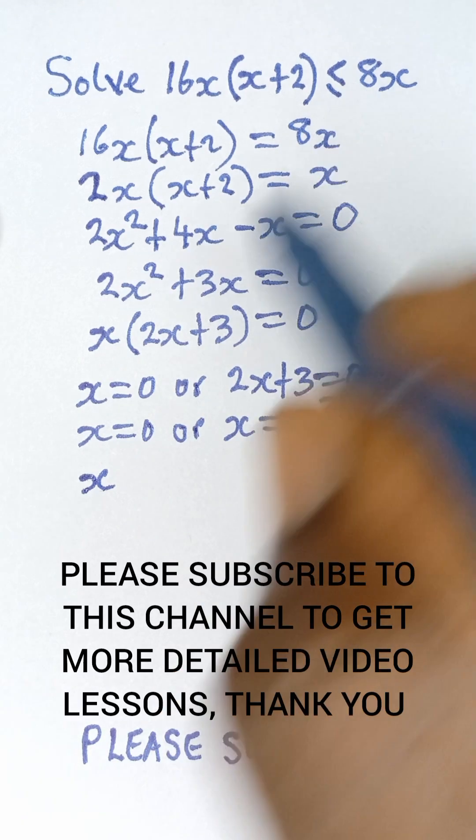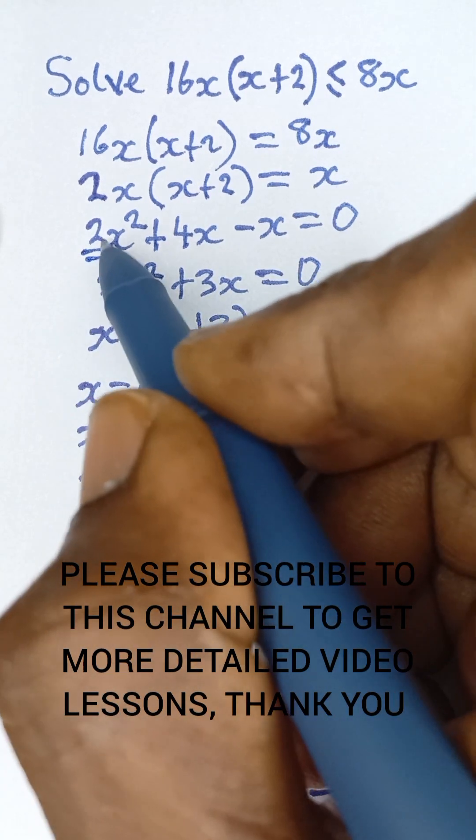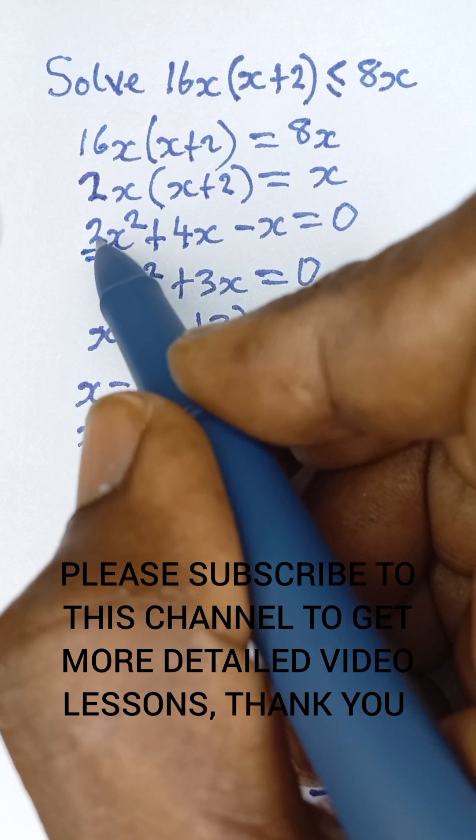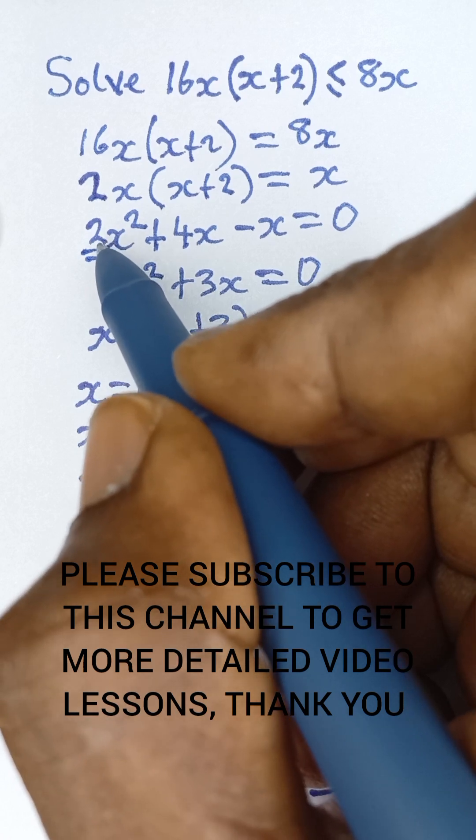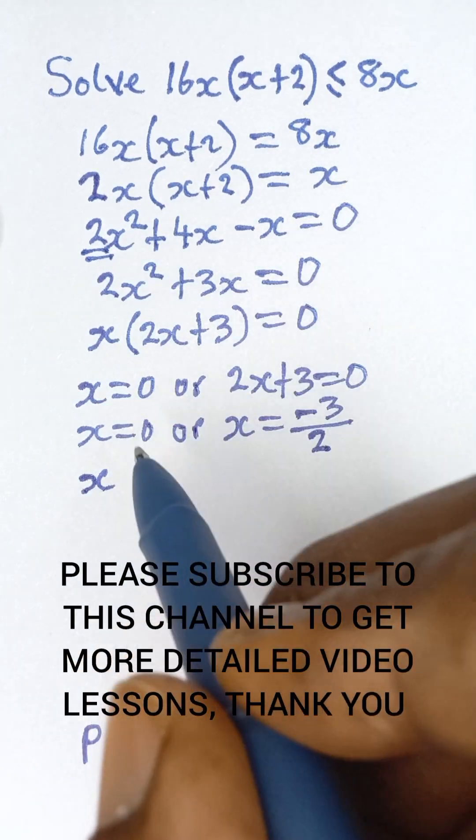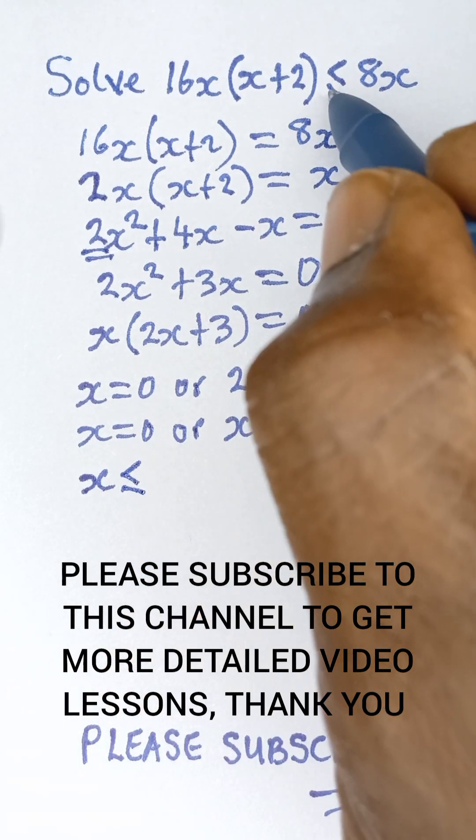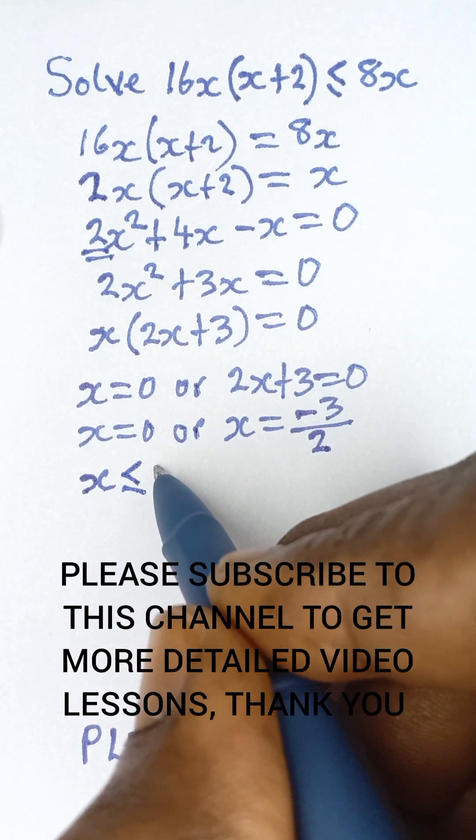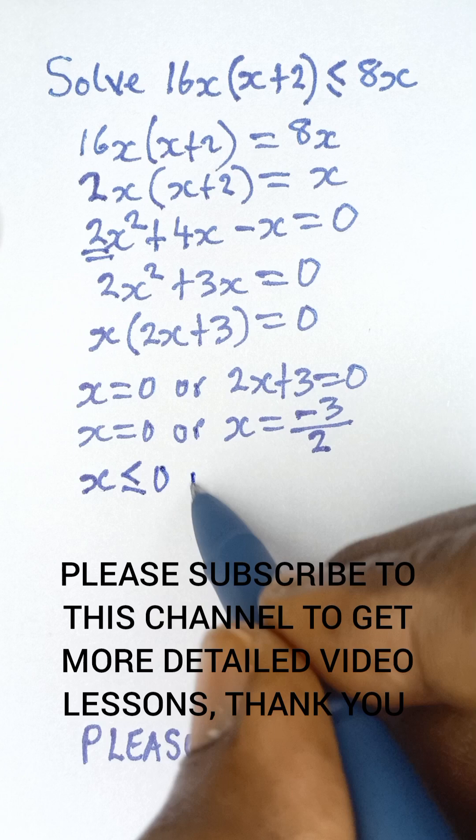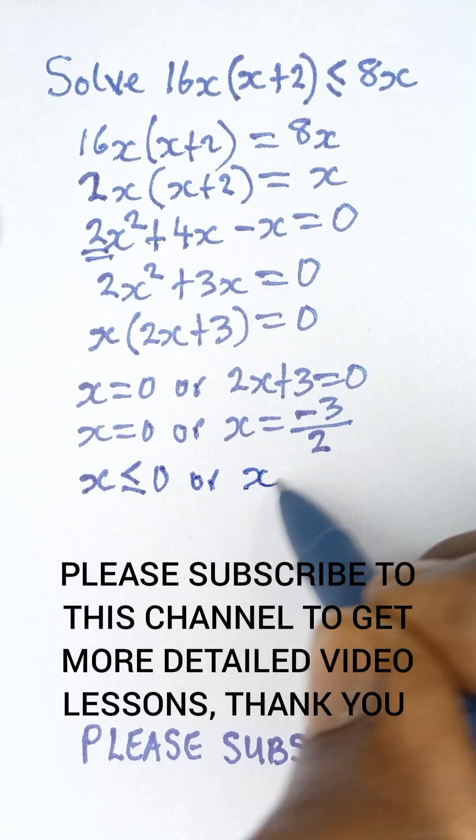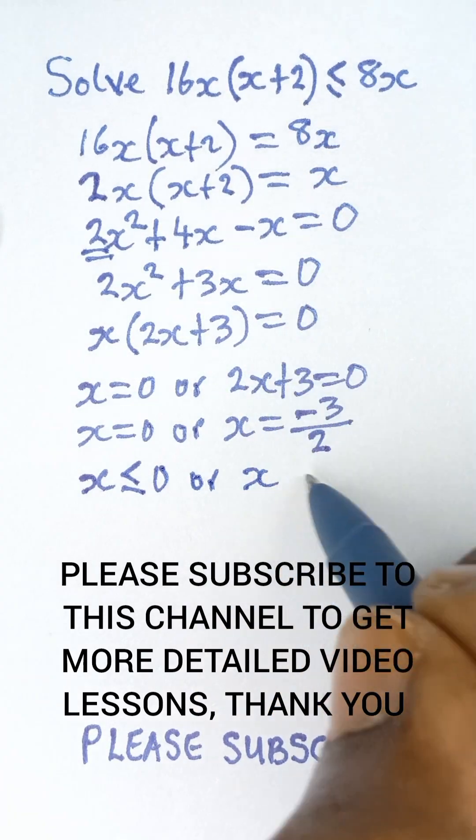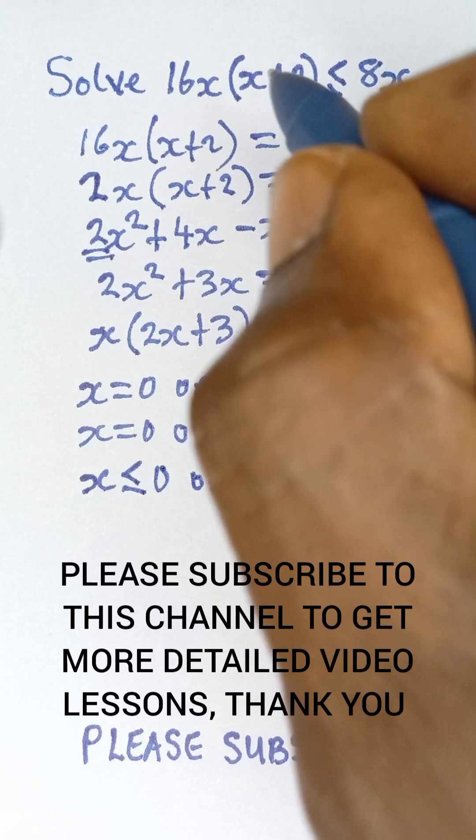When you have a value greater than 0 here, what you need to do is take the greater answer to take the original inequality sign, and that gives us x ≤ 0. The second value takes the reverse sign of the inequality, reversed, and you take -3/2.